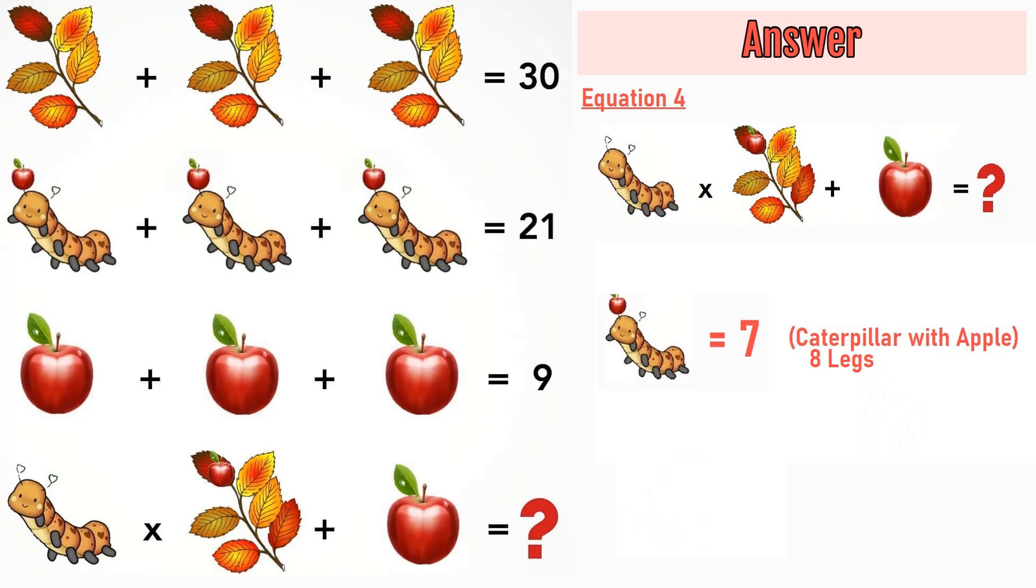So from equation 2, we have a caterpillar with an apple is equal to 7 and it has 8 legs. From equation 4, a caterpillar has no apple with 6 legs.